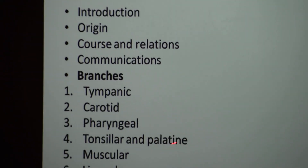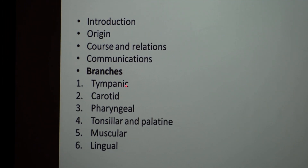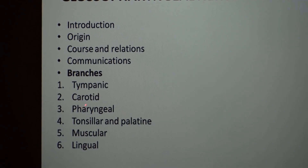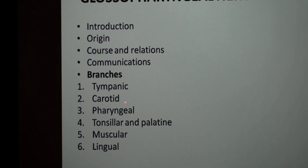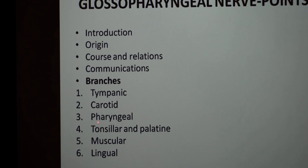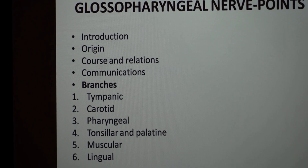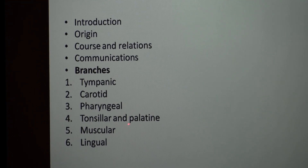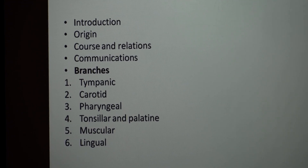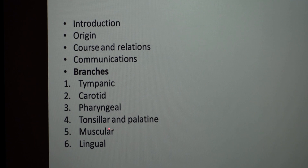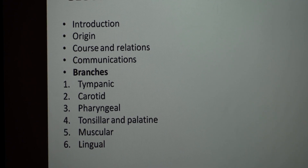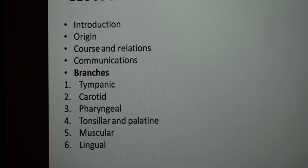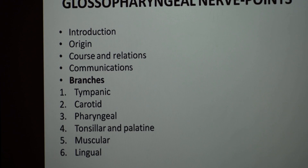The branches of the glossopharyngeal nerve are: the tympanic branch, which enters the tympanic cavity; the carotid branch, which supplies the carotid body and sinus; the pharyngeal branch, which forms the pharyngeal plexus and supplies the oropharynx; the tonsillar and palatine branch for sensory supply; the muscular branch to the stylopharyngeus; and the lingual branch for the posterior one-third of the tongue — both general and taste sensation.